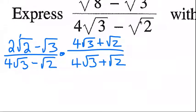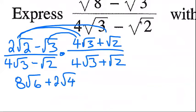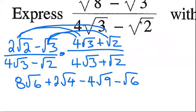Do your FOIL or distributive property — whatever you want to call it. 2 square root 2 times 4 square root 3 is 8 square root 6. 2 square root 2 times square root 2 is going to be 2 square root 4. Minus square root 3 times 4 square root 3 is going to be minus 4 square root 9. Minus square root 3 times root 2 is minus square root 6.